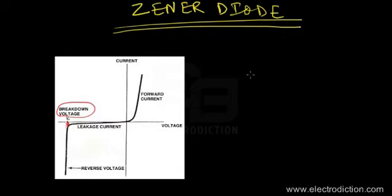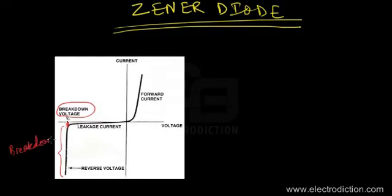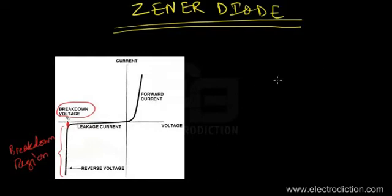The zener diode is a special type of diode designed to operate in the breakdown region. The region after the breakdown voltage is reached is known as the breakdown region. So the zener diode operates in the breakdown region, which means this device is used in the reverse biased state.